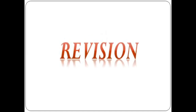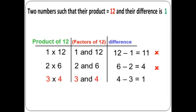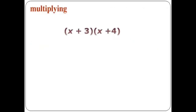So give me attention here for our revision. I want two numbers: if I multiply them, they give me 12 — that's three and four — and if I find the difference between them, it gives me one. So the two numbers are three and four. I think our students are very smart to understand it.